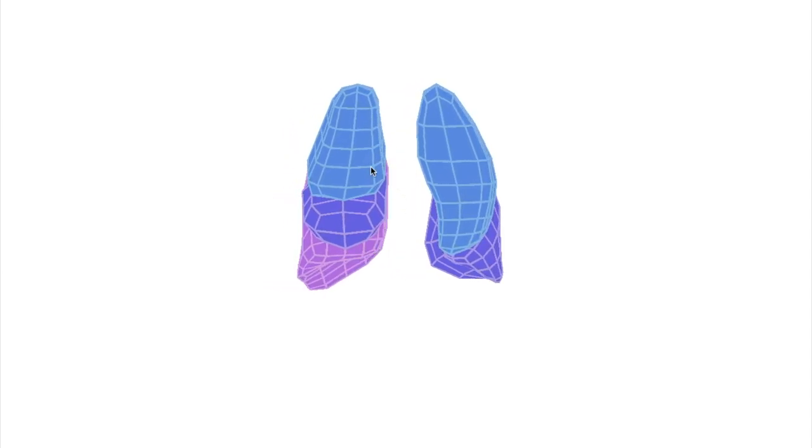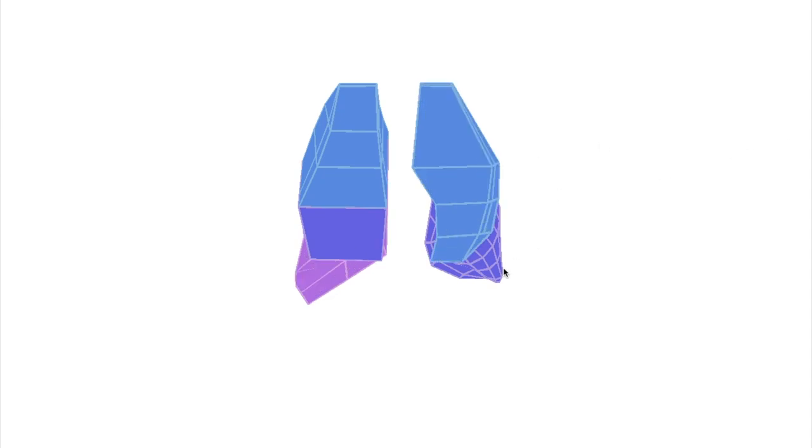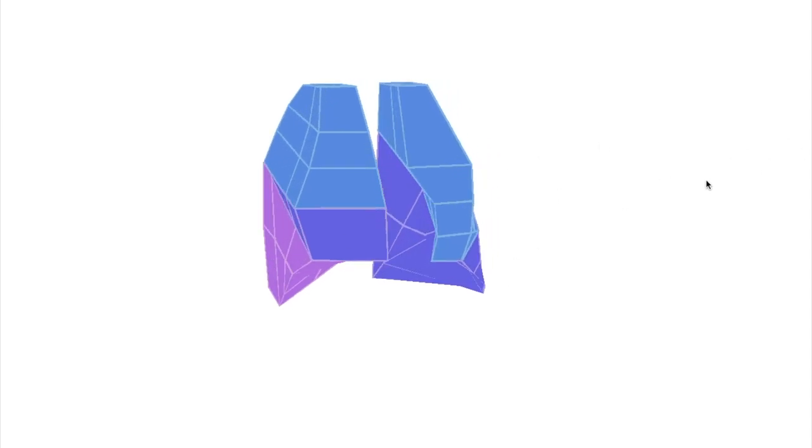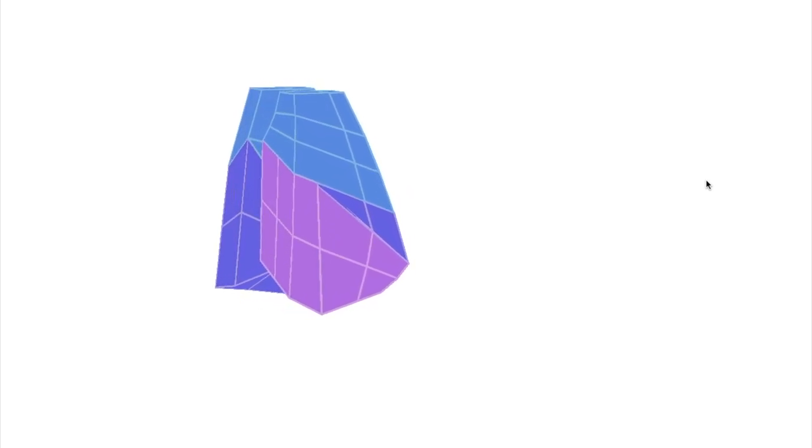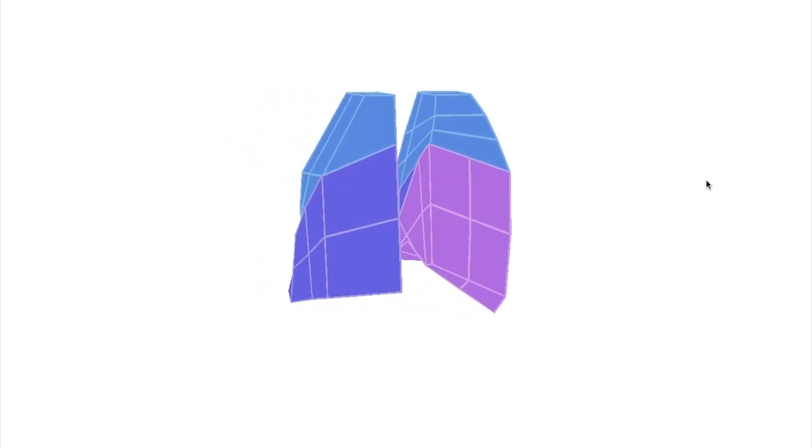To mark out the fissures between the lobes, we're going to bring down the complexity of the models so that their borders are nice and distinct. And now that we've done that, let's draw the borders between the lobes, which we call the fissures of the lungs.